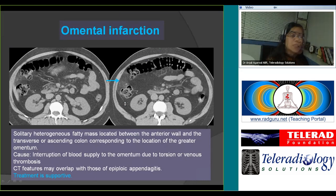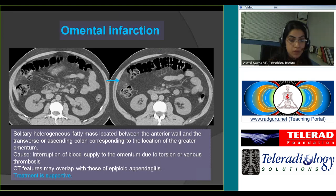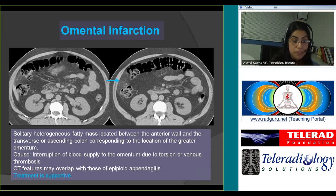A similar but different condition is omental infarction, where you see solitary, ill-defined areas of fat stranding — usually a mass-like heterogeneous fat between the anterior wall and the transverse or ascending colon, corresponding to the location of the greater omentum. The infarction is caused by interruption of blood supply due to torsion or venous thrombosis. Treatment is supportive, and correct diagnosis prevents unnecessary surgery.